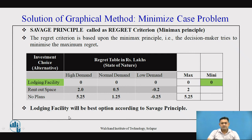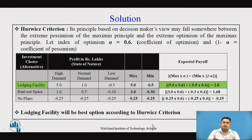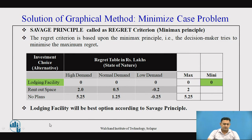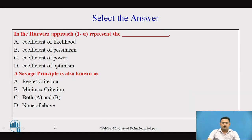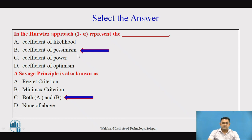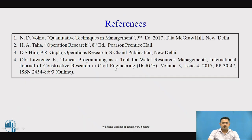So lodging facility is the best option according to the Savage principle as well. In summary, by both the Hurwicz criteria and the Savage principle, we arrive at lodging facility as the best alternative. These are the references for today's session. Thank you.